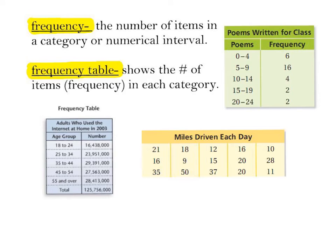First you need to know what frequency actually means. Frequency is the number of items in a category - basically how many times it happens. Like I surveyed people on how many miles they drove each day. Somebody said 21, somebody said 16, 35, 18, 9, 50 - that's the frequency in which it occurred. A frequency table shows the number of items in each category. Look at this table showing poems written for class. How many people wrote zero to four poems? Six people. Frequency means how many. How many wrote five to nine poems? 16. Twenty to 24 poems? Two people. That's basically what a frequency table looks like - a table that shows the results of your survey.